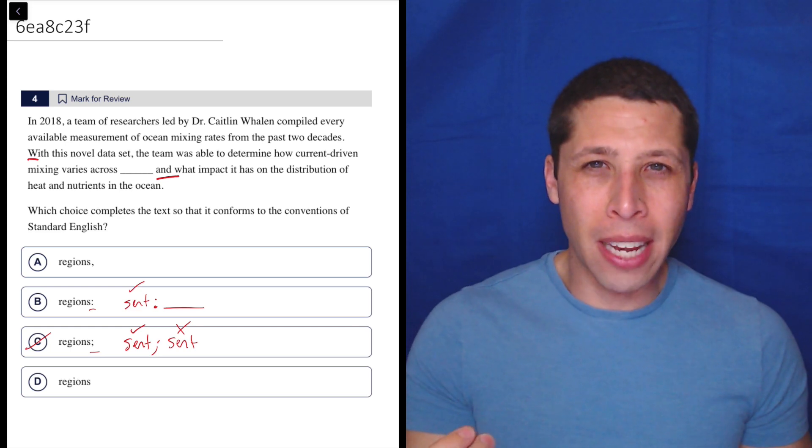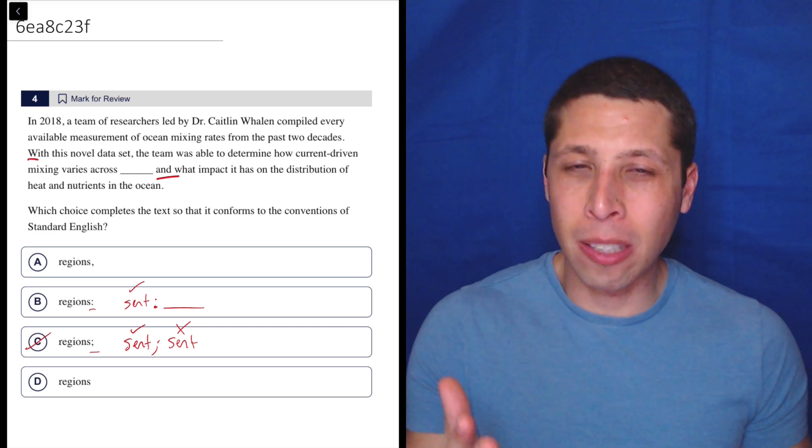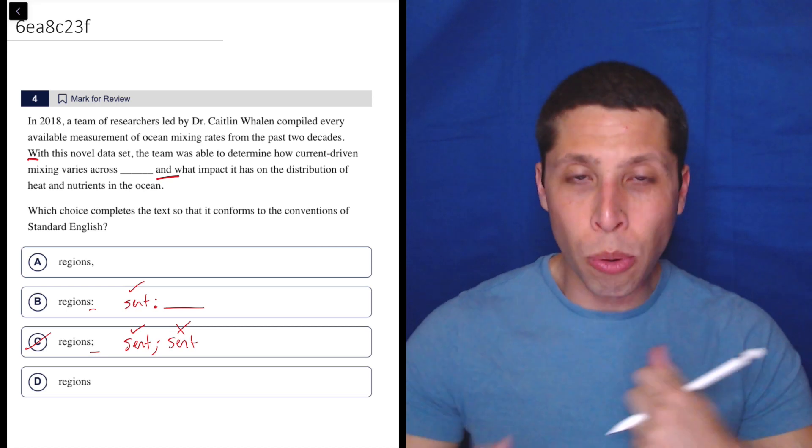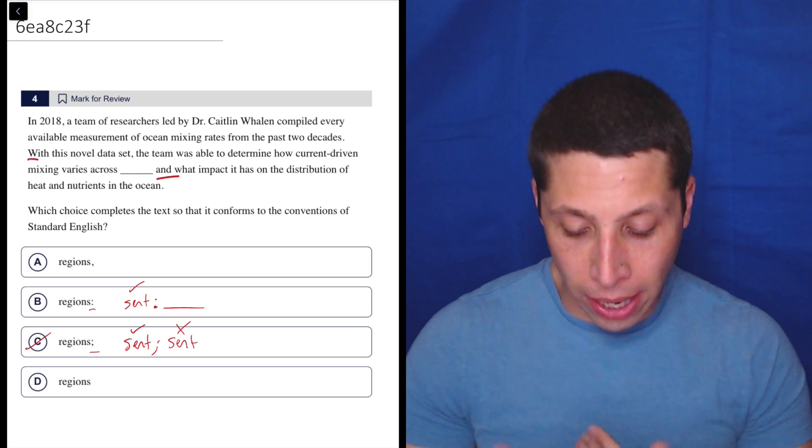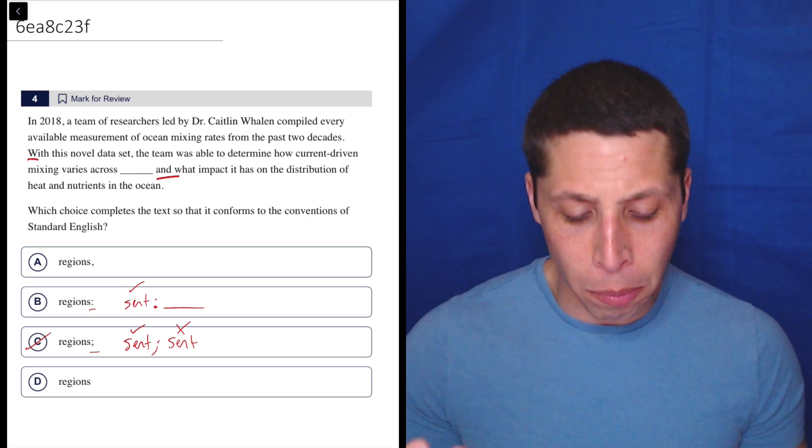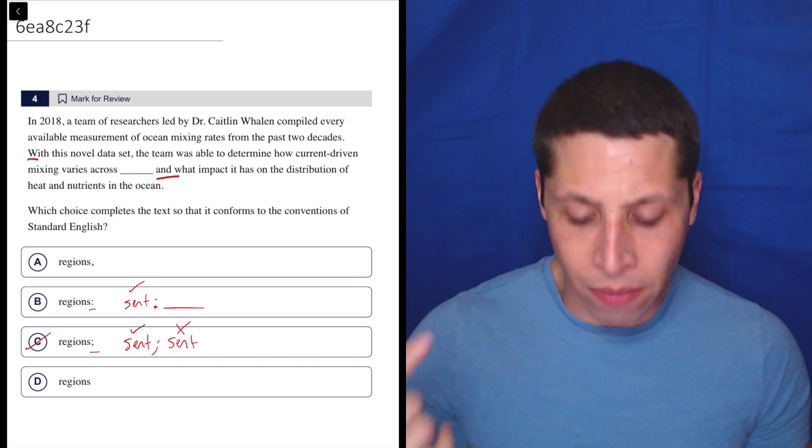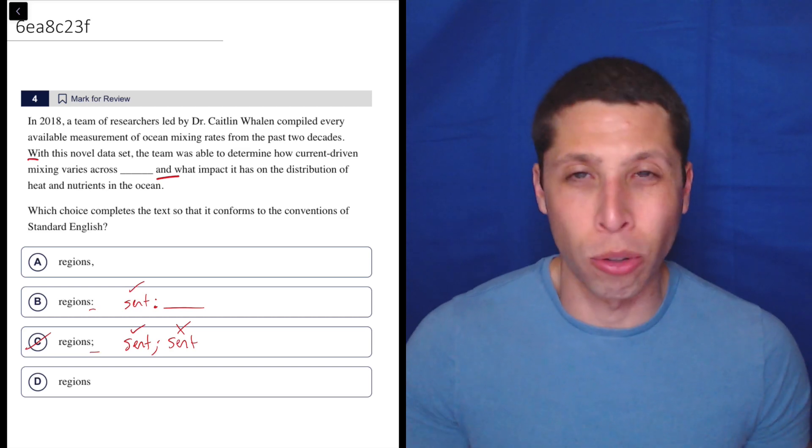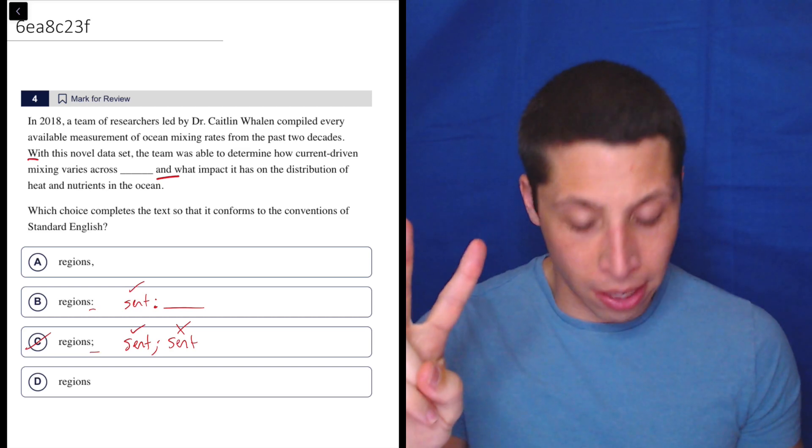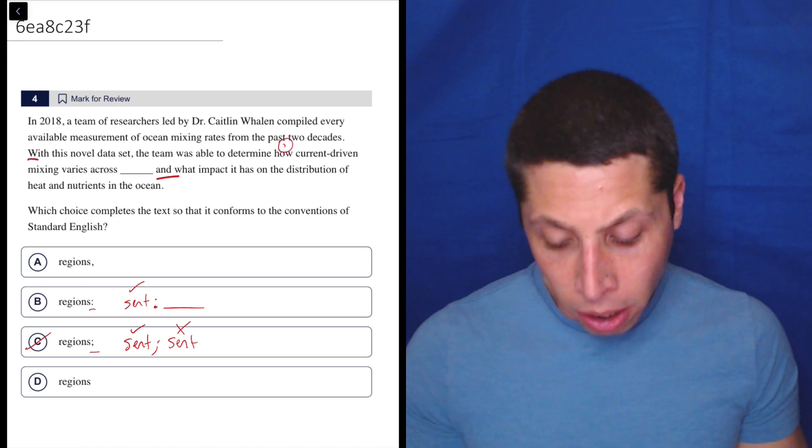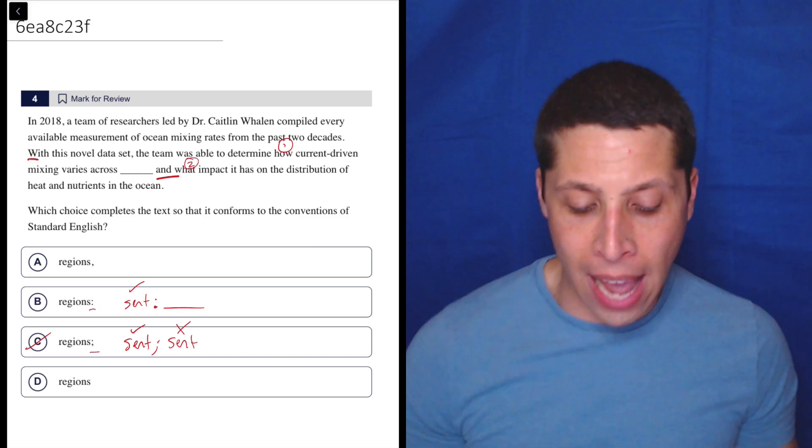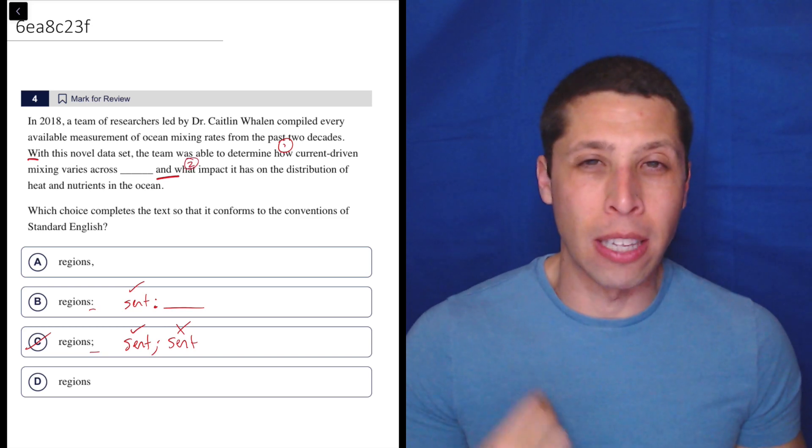But again, it'd be very weird to just interrupt our sentence right at that spot and kind of break it apart. It seems like these are two things that we're talking about together. The team was able to determine how current driven mixing varies across regions and what impact it has on the distribution of heat and nutrients in the ocean. There are two things that they were able to determine. How current driven mixing varies across regions and what impact it has on the distribution of heat and nutrients in the ocean.